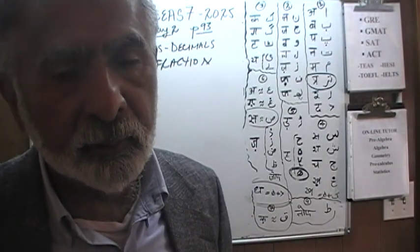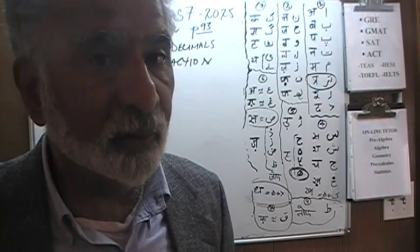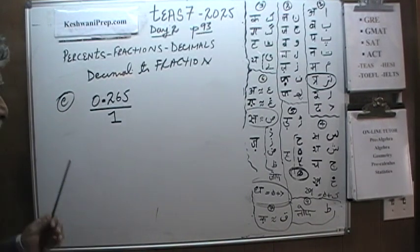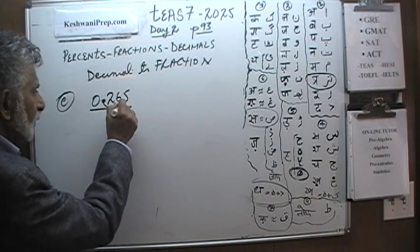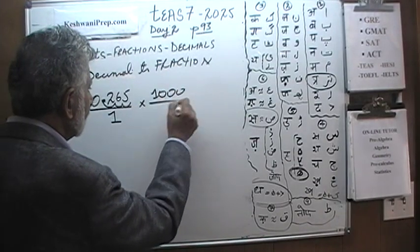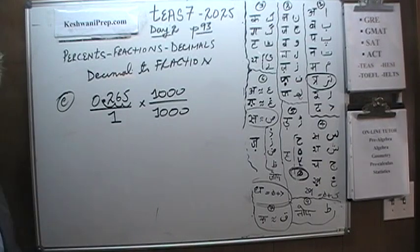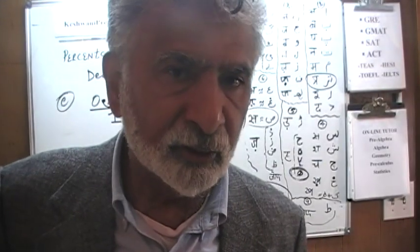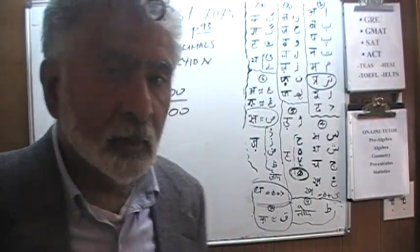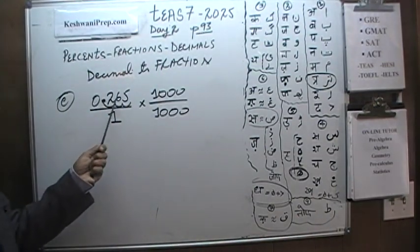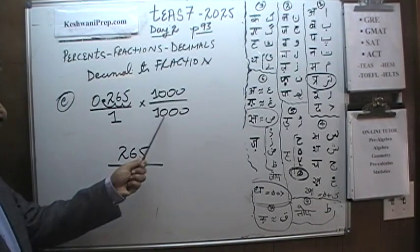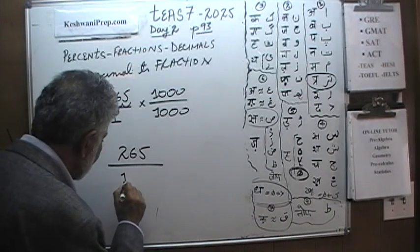We need to move this decimal three places — one, two, three — and we can do that by multiplying top and bottom by 1000. When we multiply top and bottom by 1000, we have not changed the value because 1000 divided by 1000 is one, and multiplying by one does not change the value. 0.265 multiplied by 1000 becomes 265. On the bottom we have 1 times 1000, which is 1000 — but I'm going to write this as 10 times 100, and you will see why in a moment.